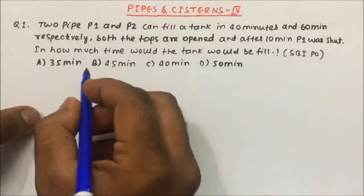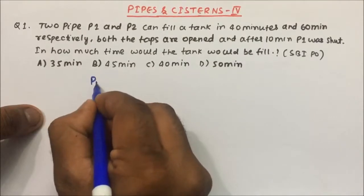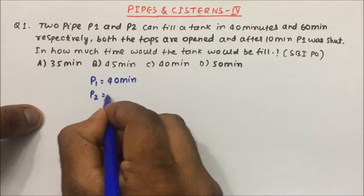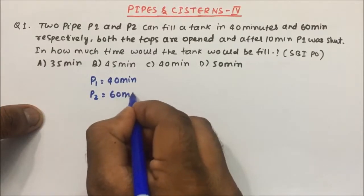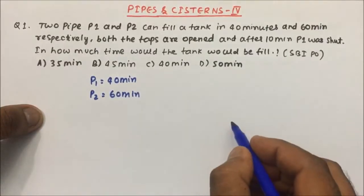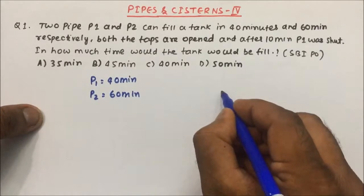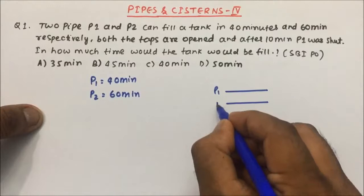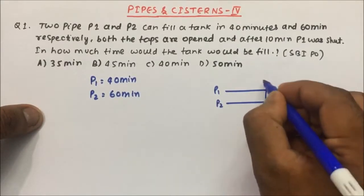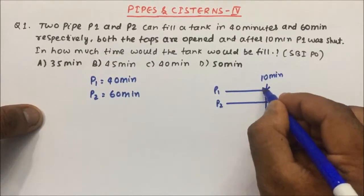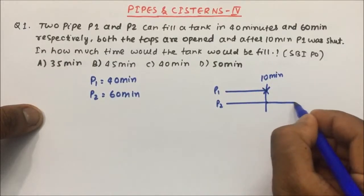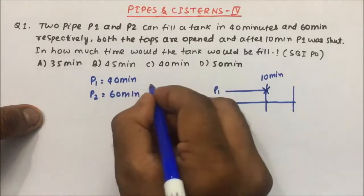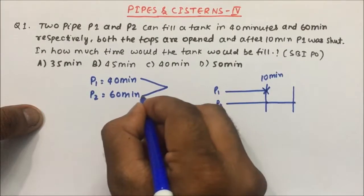Two pipes P1 and P2 can fill a tank in 40 minutes and 60 minutes respectively. Both the taps are opened, and after 10 minutes P1 was shut. So both P1 and P2 were opened, and after 10 minutes P1 is closed, meaning after 10 minutes only P2 will work.